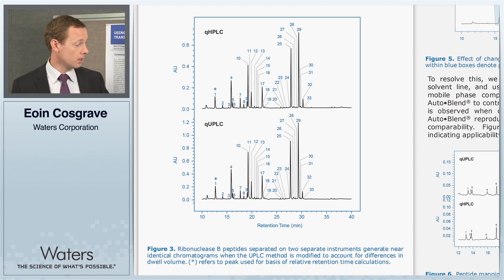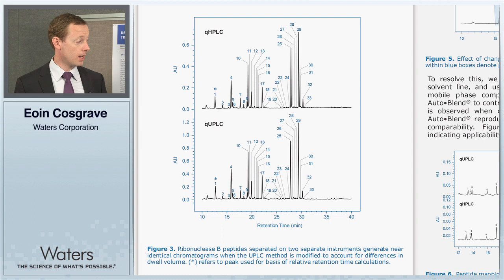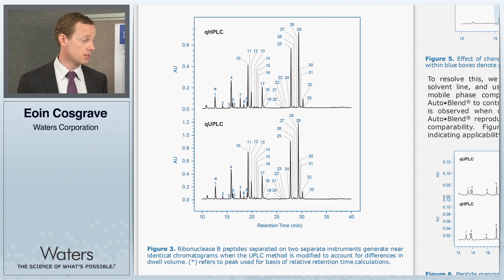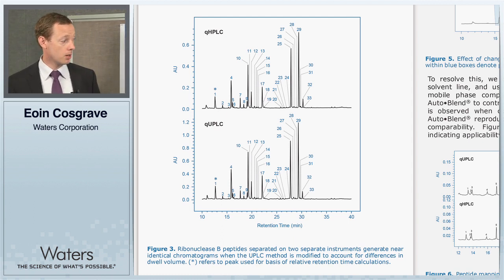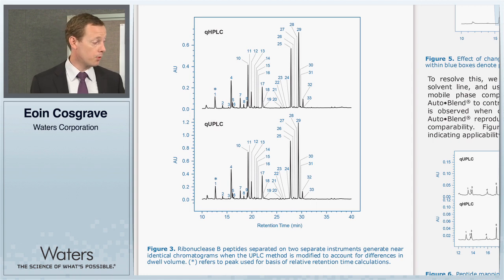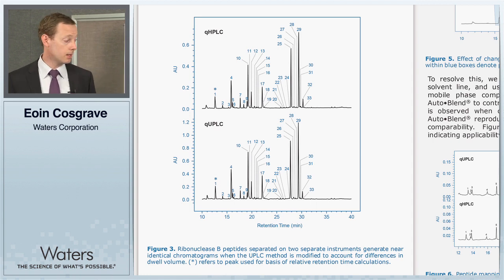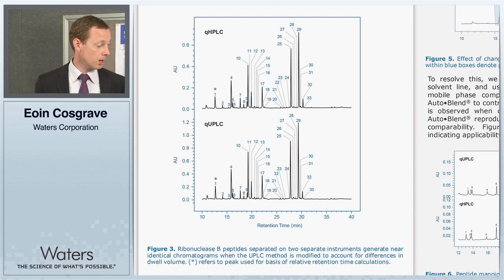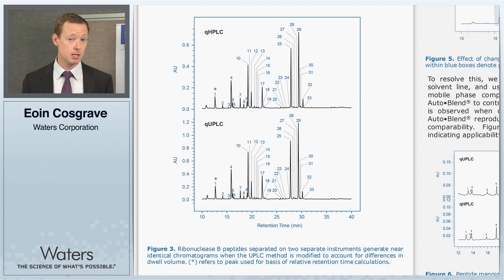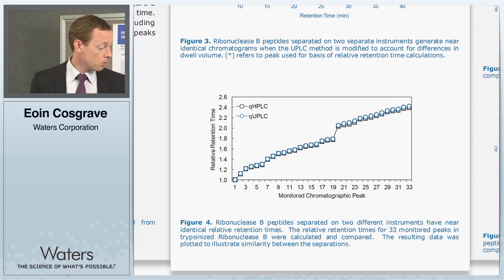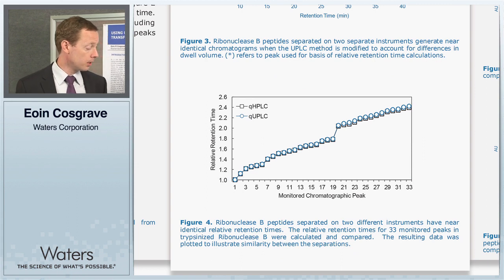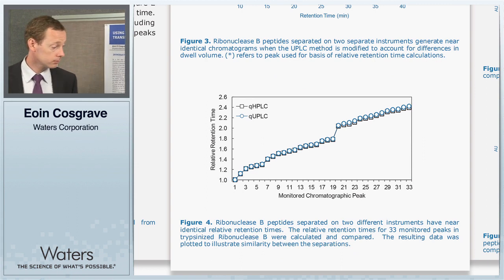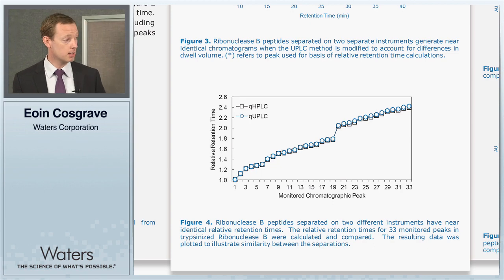In figure three, the top chromatogram is the legacy HPLC instrument chromatogram of a tryptically digested ribonuclease B, and here we monitored 33 peaks across that profile. When we take that same method and include the gradient start offset, we get the exact same relative retention times using the H-class Bio compared to the legacy HPLC instrument. This is quantified in figure four, where the relative retention times of these two profiles overlay quite nicely.